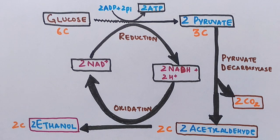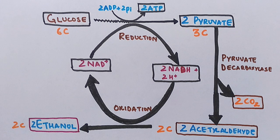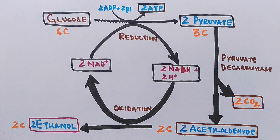Alcoholic fermentation is found in yeasts and some species of bacteria, such as Zymomonas mobilis. Ethanol fermentation has many uses, including the production of alcoholic beverages, the production of ethanol fuel, and bread baking.